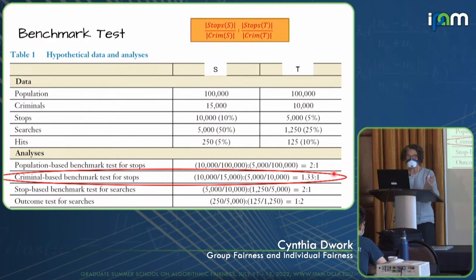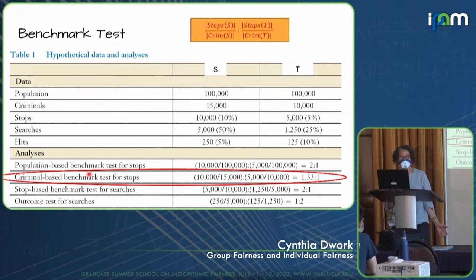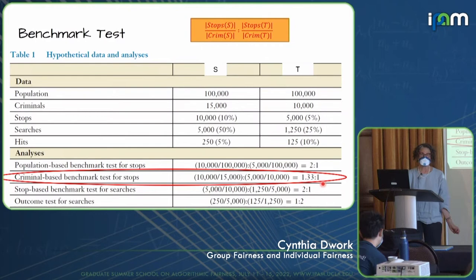Another kind of benchmark is the criminality-based benchmark. In the denominator is the number of criminals in S versus the number of criminals in T. With the criminal-based benchmark test for stops, we get a ratio of 1.33 to 1, indicating some unfairness, but not the same degree as the previous test. Same data, different degrees of unfairness.